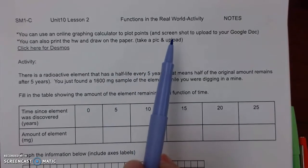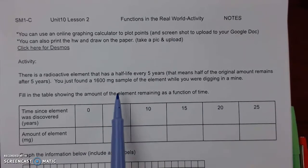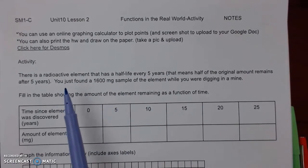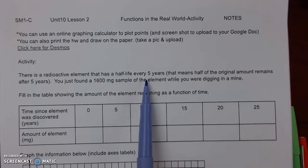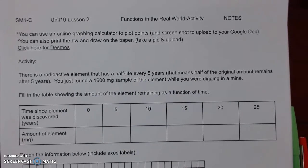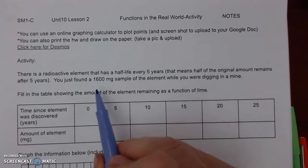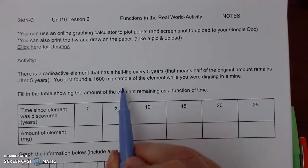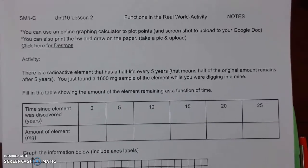Our example is a radioactive element. It has a half-life every five years, so half-life means that for that certain increment, every five years you're gonna have half of what was left before. We just found a 1600 milligram sample of the element while we were digging.